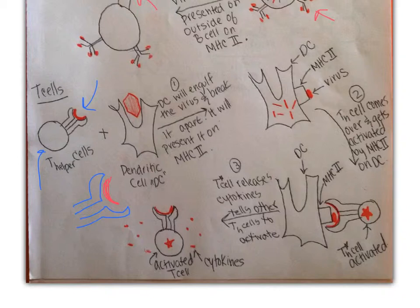T helper cells need dendritic cells to help them out. And the dendritic cell is actually going to engulf the virus and break it apart and present it on MHC-2, just like the B cell does. So then we show our MHC-2 presenting our virus, and we show the virus being broken up inside our dendritic cell, just like we did before with the B cell.